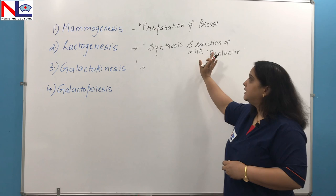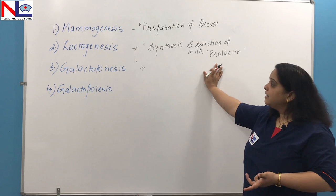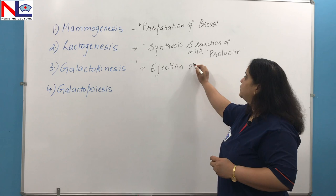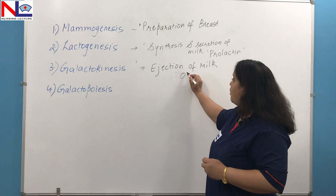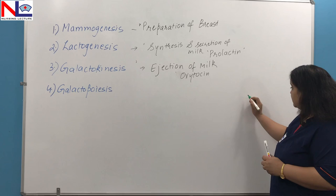After milk is synthesized, what comes next is ejection of milk. Once the milk is synthesizing, the milk needs to come out to feed the baby. The third important physiology is galactokinesis, which is the ejection of milk, and the responsible hormone behind this phase is oxytocin. Let me draw a figure here to show how oxytocin plays an important role in the ejection of milk.